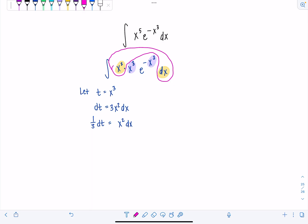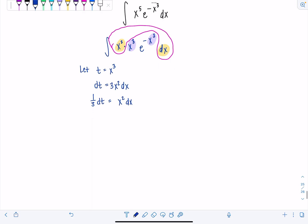And then I do like to always put my constants outside. If you've watched my videos for a while, you know this. So we've got the 1 3rd outside integral. x squared dx, just dt. Then this x cubed is t. And then I have e to the negative x cubed, which is going to be e to the negative t.